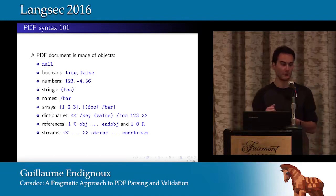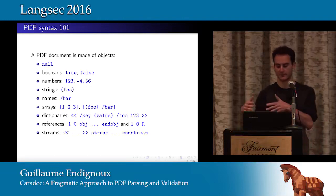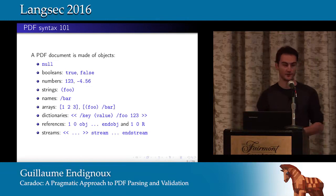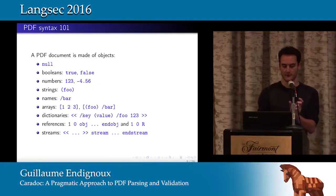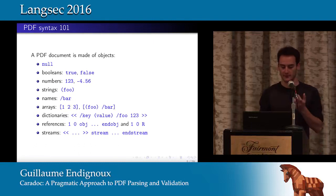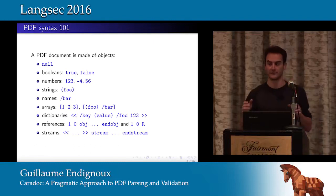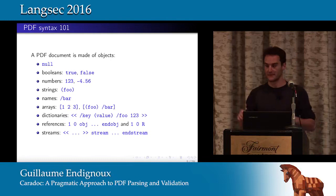You also have streams, which allow compressing content. For example, if we want to include images inside a document, they will be included in a stream. The stream also has metadata in the form of a dictionary — for example, the dimensions of the image.